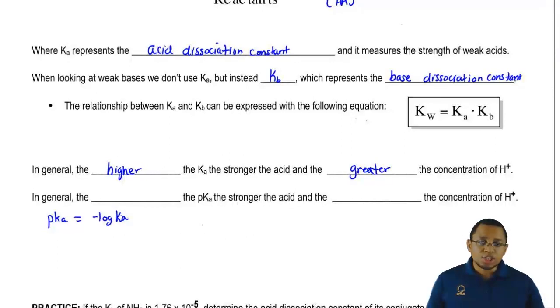Here we're going to say there's an inverse relationship. It's actually the lower the pKa, the stronger the acid. And the stronger the acid, the greater the H plus concentration.